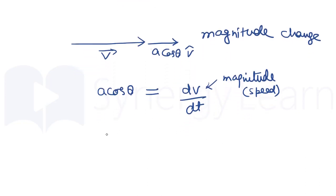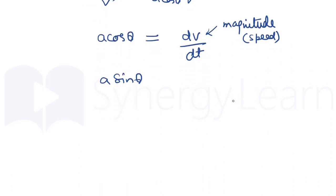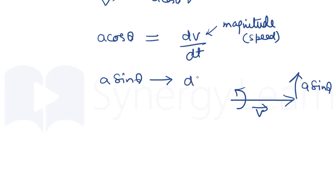The other component, A sin theta, which is perpendicular to the velocity vector, brings about a change in direction, because A sin theta acts perpendicular. So it will rotate the vector, keeping its magnitude the same. The role of A sin theta is change in direction, which we symbolically write as d(V-hat) — the change in direction of the vector. So any change in a vector is brought about in two parts: one, the change in magnitude, and the other, the change in its direction.